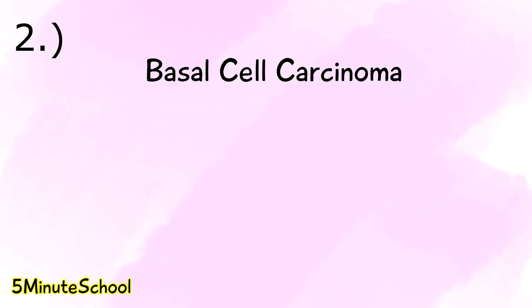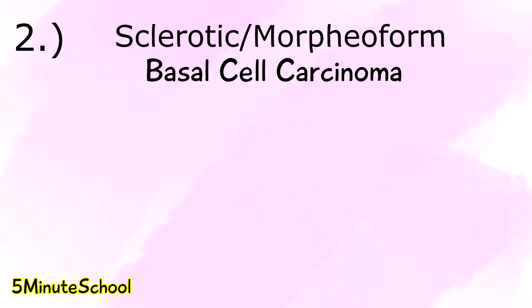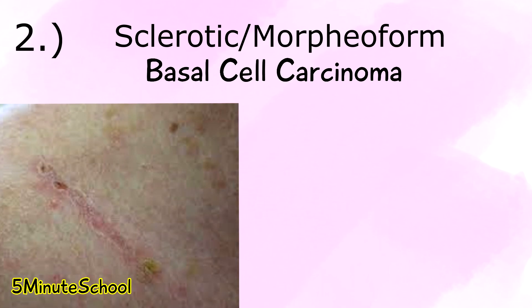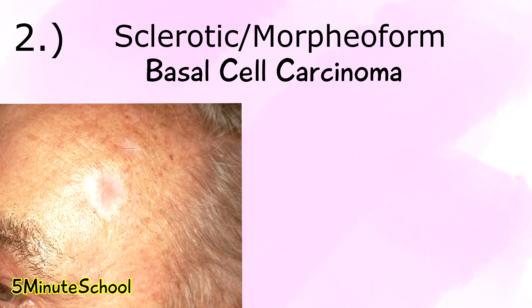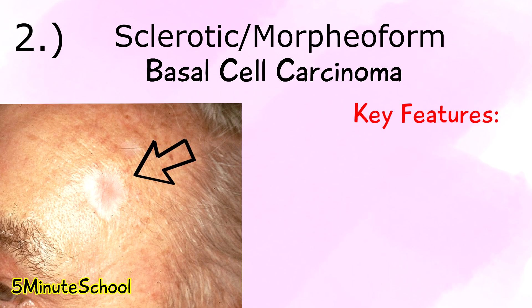Another type is the sclerotic basal cell carcinoma, also known as morpheaform basal cell carcinoma. This is a more aggressive form. Often patients have a scar which doesn't really heal, and sometimes it can even go unnoticed. The borders are not very well defined, which is one of the key features of this type. There aren't many clinical appearances, which is the main reason why they can sometimes go unnoticed.